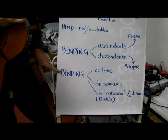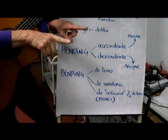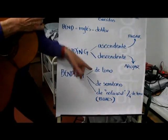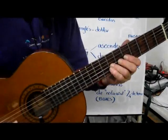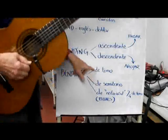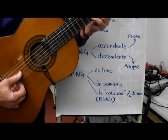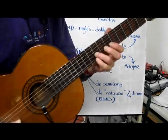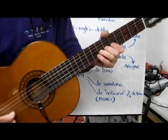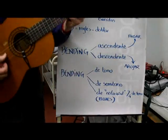The bending can be done with different measurements. You can make a bending that covers more notes: a bending of a tone (which is two frets), or a bending of a semitone (which is one fret). You can also make a blues note bending, which is less than a half tone.